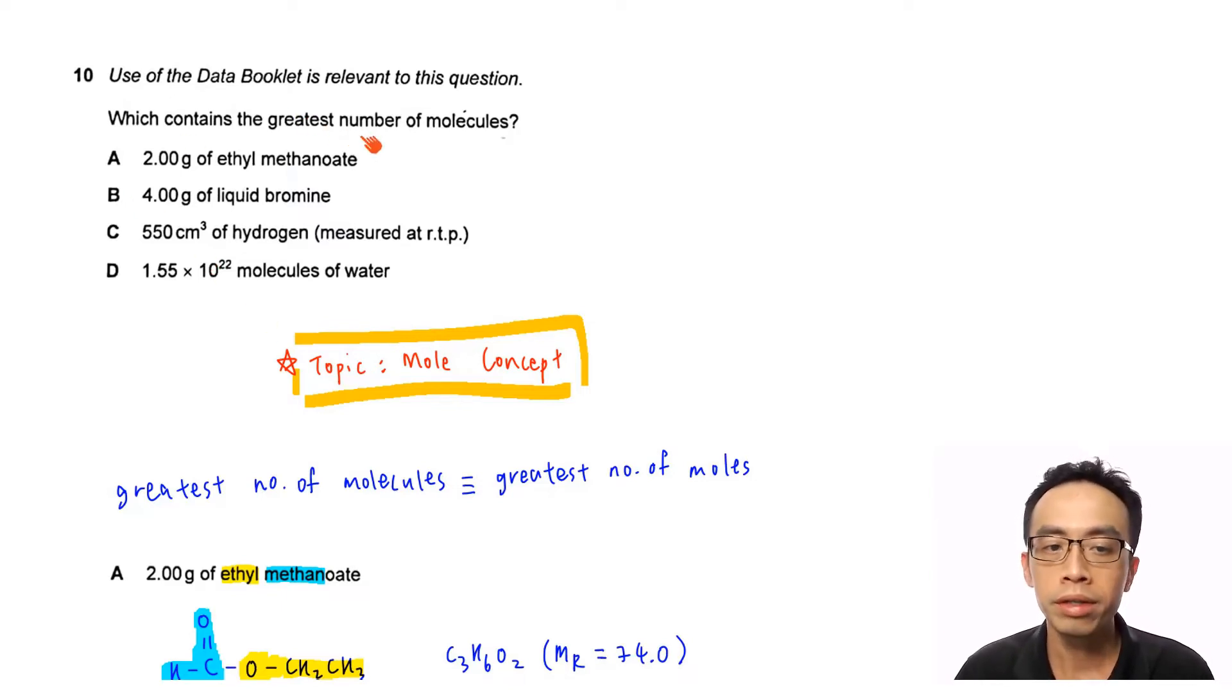Now, question 10, which contains the greatest number of molecules? So we do need to refer to the data booklet so that we can work out the molar masses for some of these species. And involving option A, 2.00g of ethyl methanoate. Option B, 4.00g of liquid bromine. Option C, 550 cm³ of hydrogen measured at room temperature and pressure. Option D, 1.55 × 10²² molecules of water.